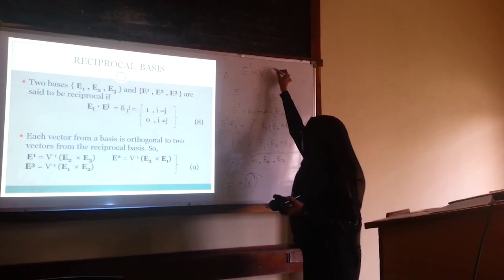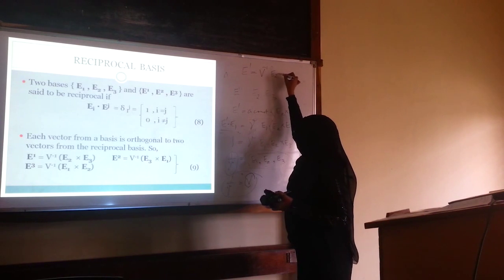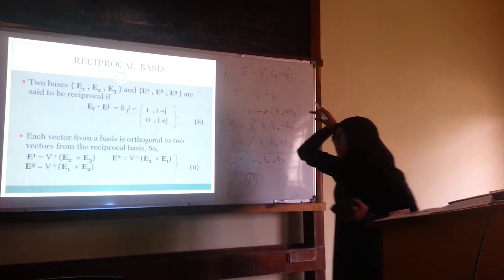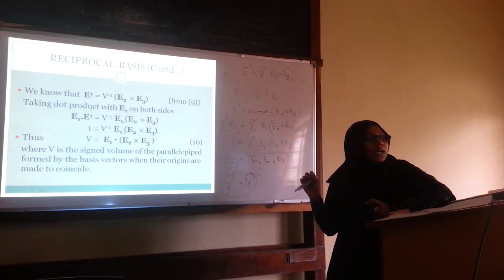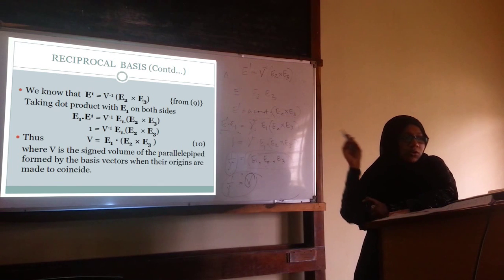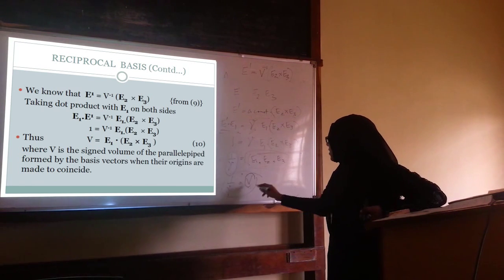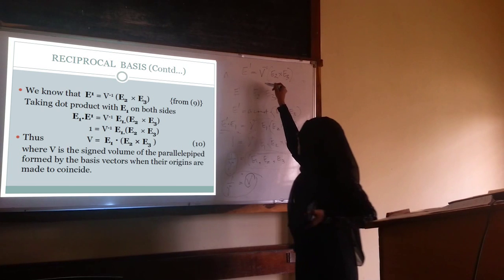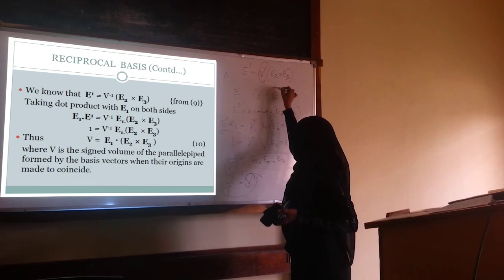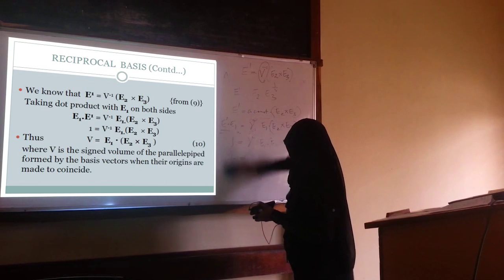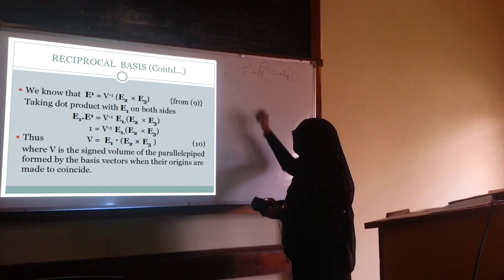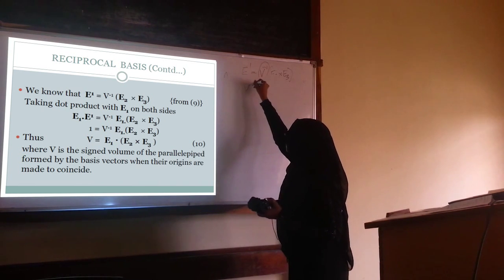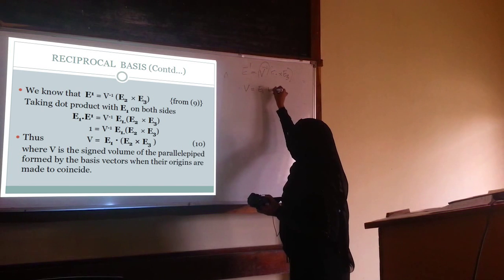From E1* = γ·(E2 × E3) and 1/γ = V, we get E1* = (1/V)·(E2 × E3). Similarly, we can derive the other two: E2* = (1/V)·(E3 × E1) and E3* = (1/V)·(E1 × E2). Here V is defined as V = E1·(E2 × E3).